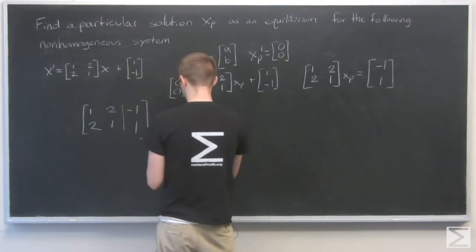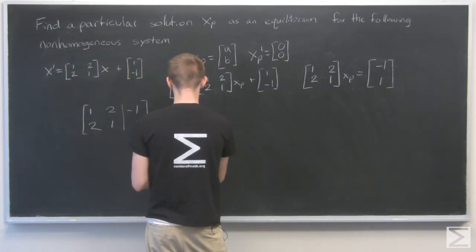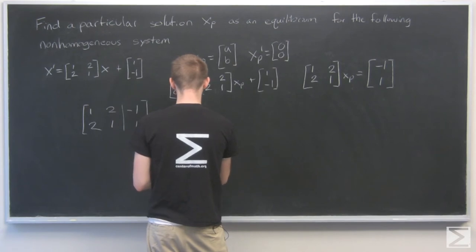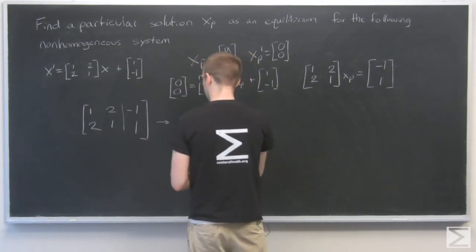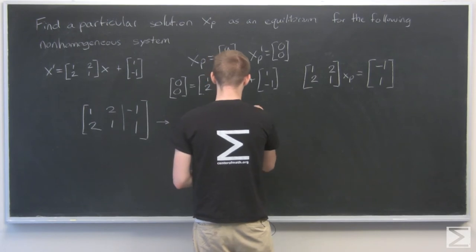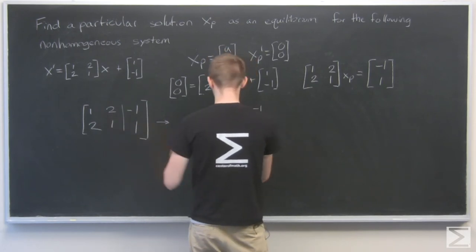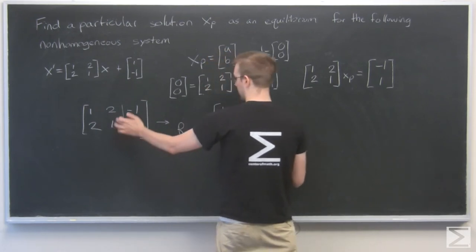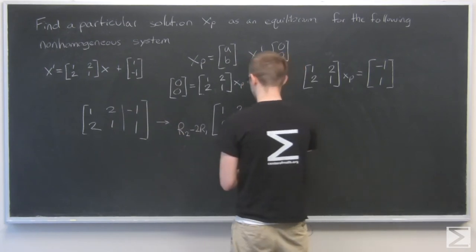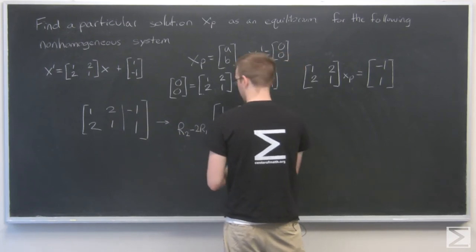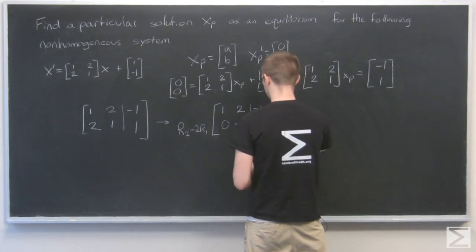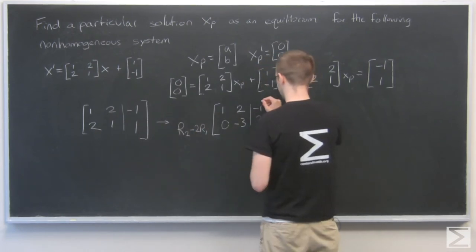So, I'll start with row 2 minus 2 times row 1, and that should get rid of this, too. 1 minus 2 times 2, that's 1 minus 4, or negative 3, and that should be positive 3, is 1 plus 2.